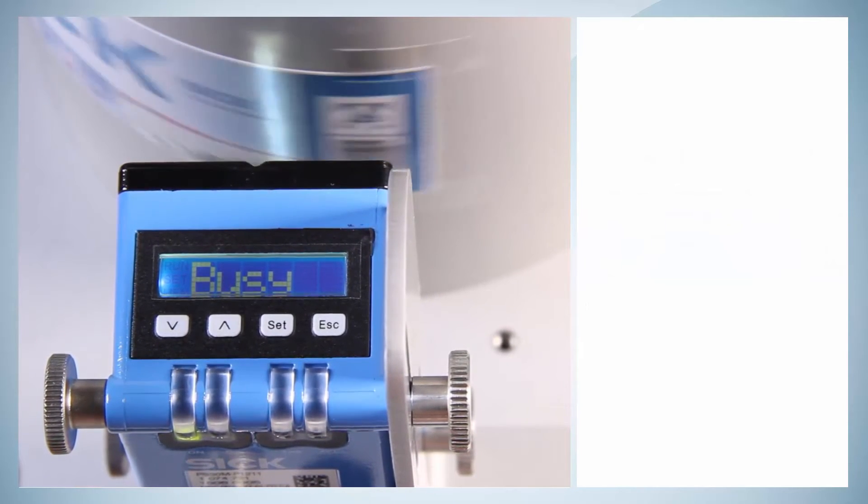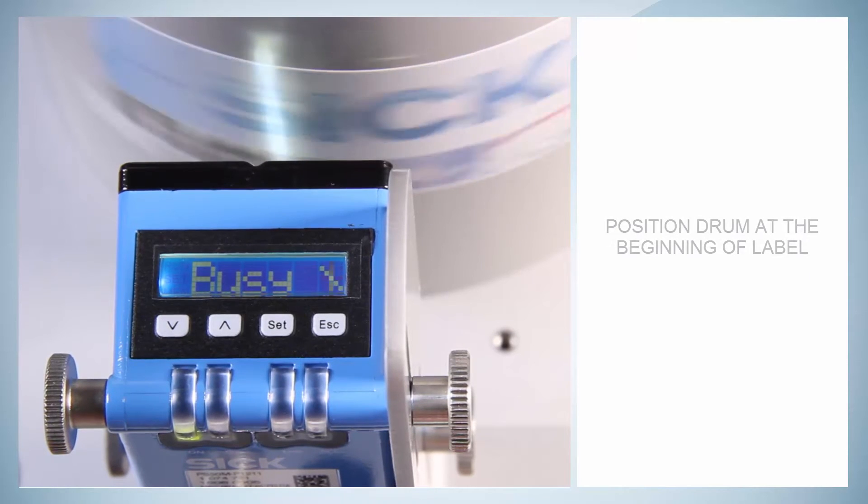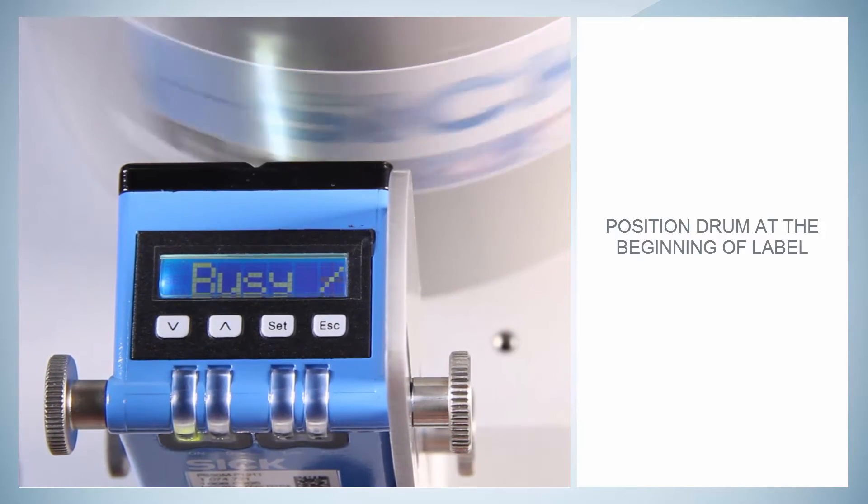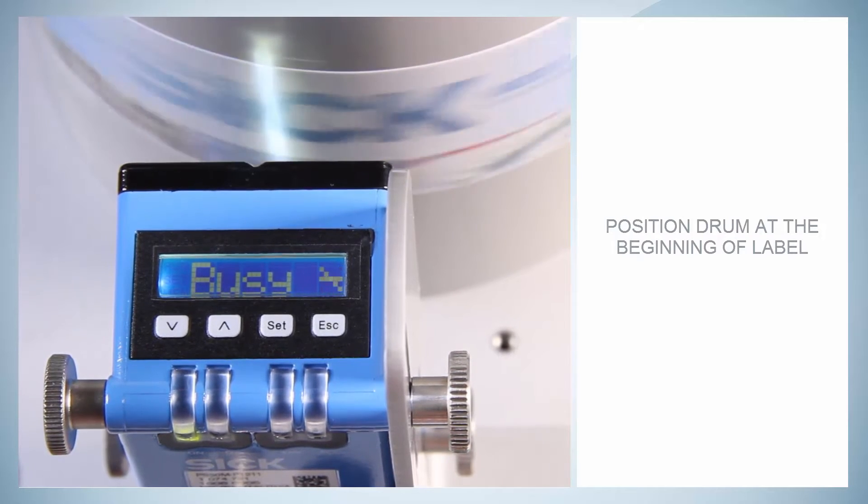When starting to turn the drum, the sensor should be positioned at the beginning of the label. The word Busy on the display indicates that the sensor is processing the picture data.